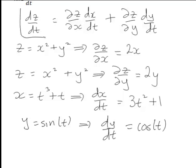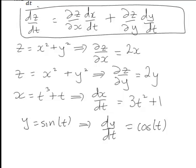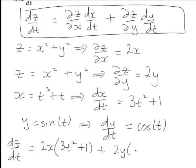Now we put all of these together into our formula to give us the derivative of z with respect to t. So in this case, dz/dt is ∂z/∂x, which was 2x, times dx/dt, which was 3t² + 1, plus ∂z/∂y, which was 2y, times dy/dt, which was cos(t).